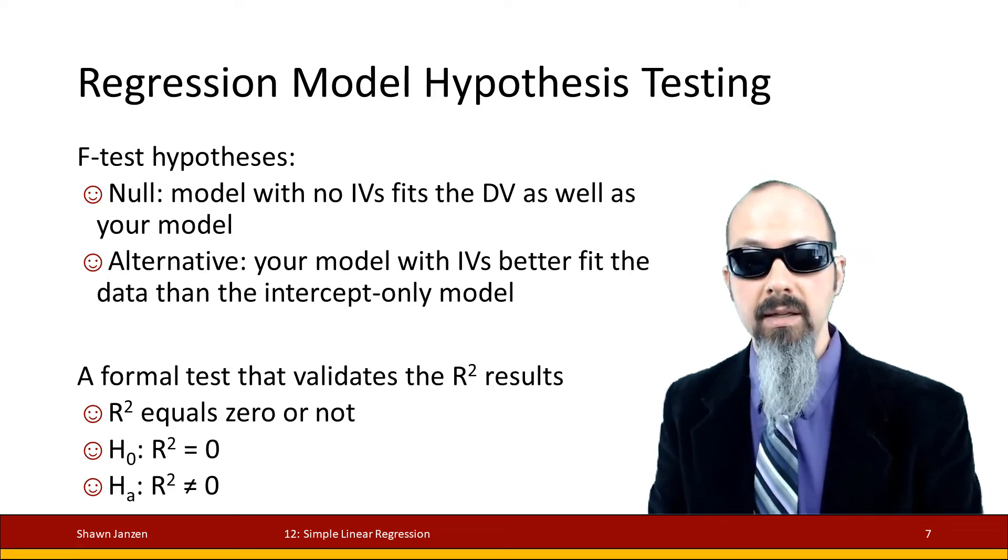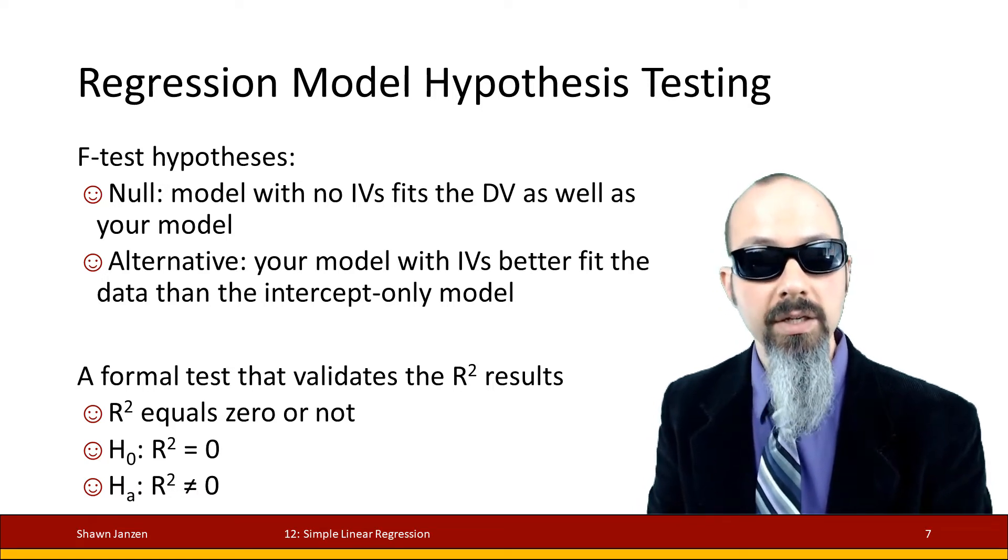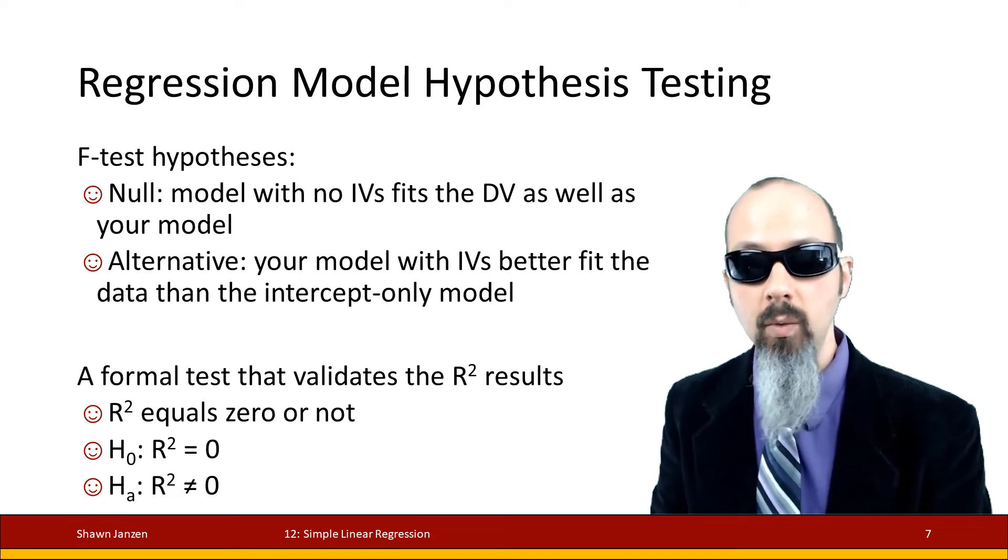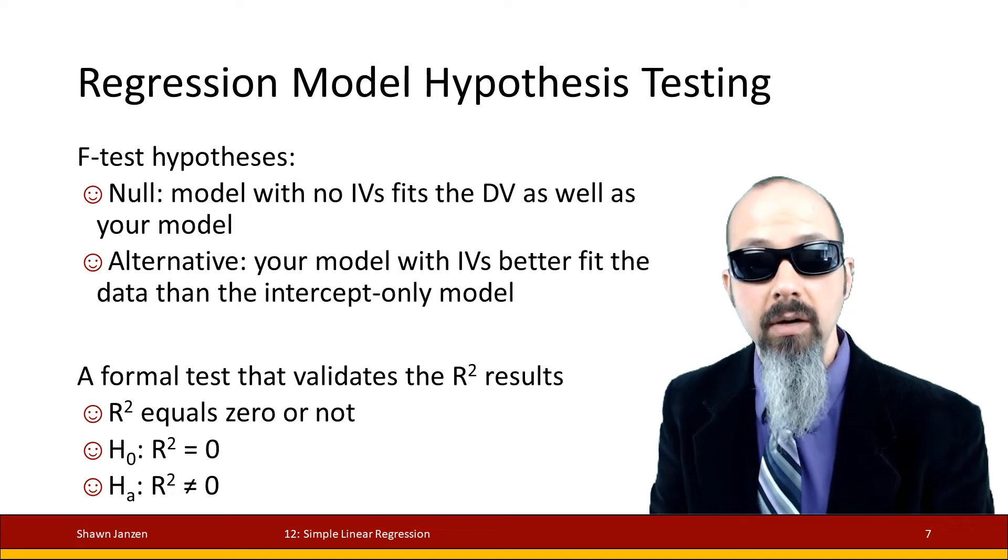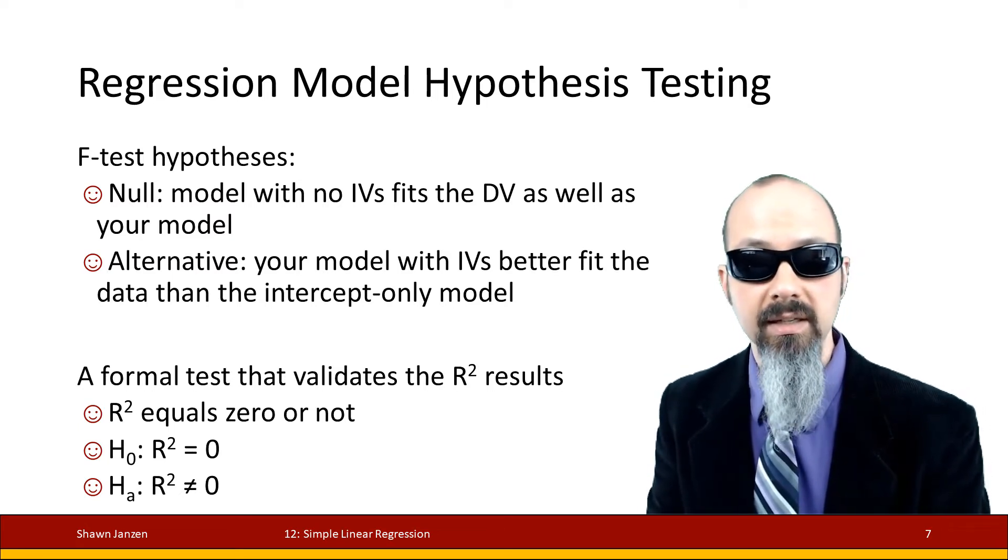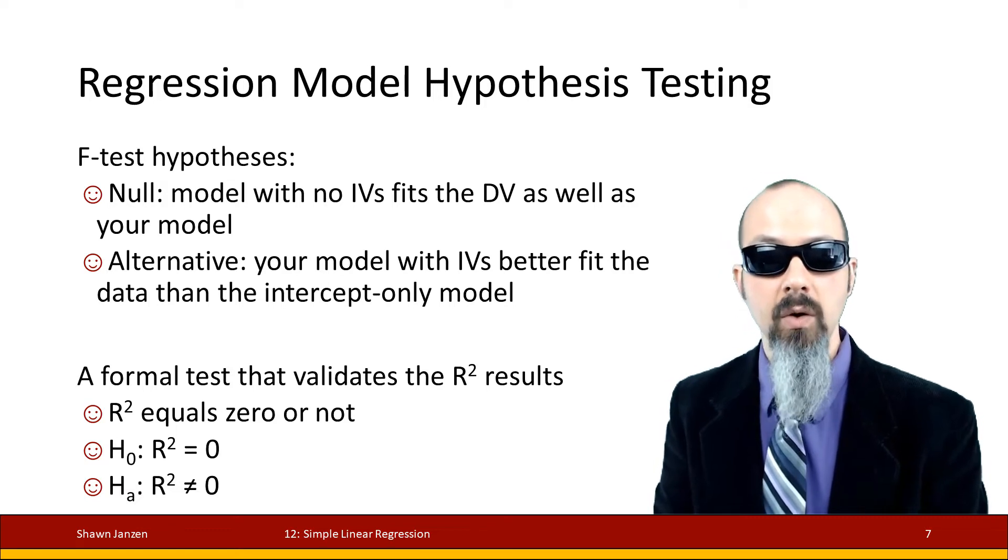The F-test is going to be a ratio of how well did your model do with your independent variables to how well did it do without the independent variables. That generates your F-score, which can then get a p-value and see if it's statistically significant or not.